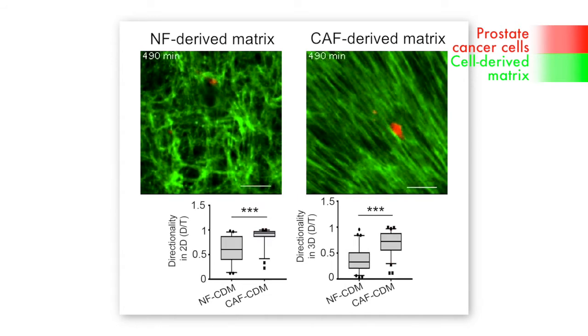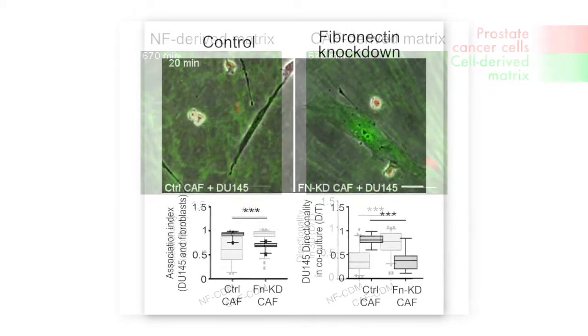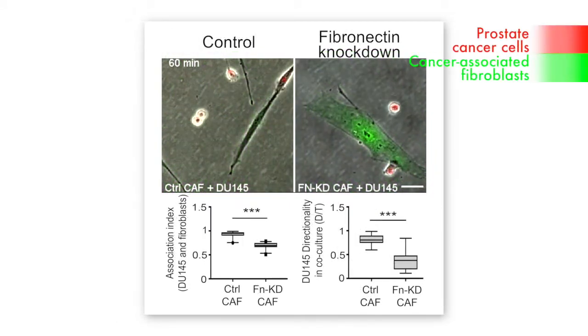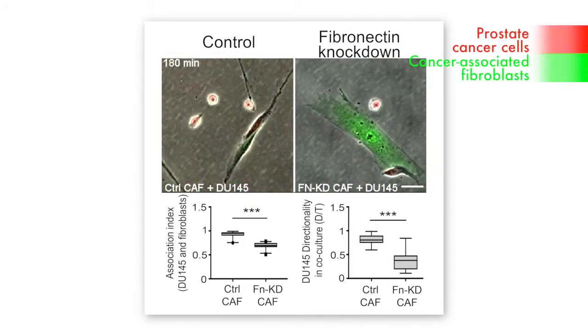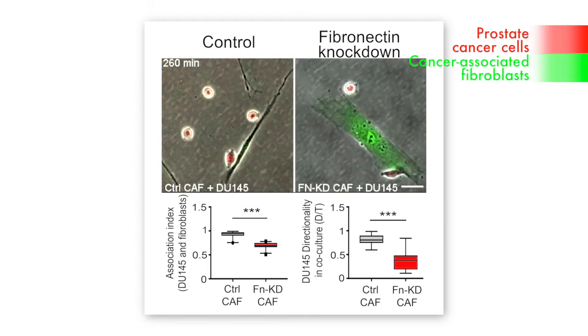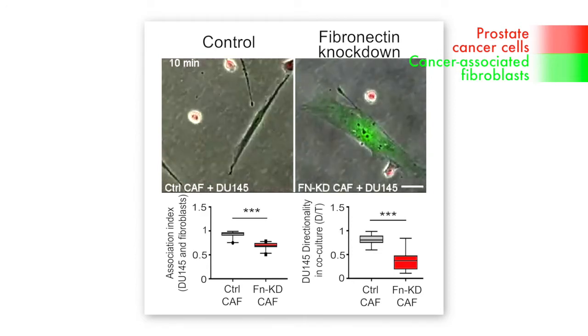Cancer cells showed increased directional migration on the parallel fibronectin fibres formed by CAFs, even after the fibroblast cells were removed. Moreover, knocking down CAF cell fibronectin inhibited both the association and directional migration of co-cultured cancer cells.